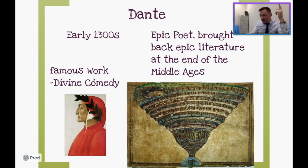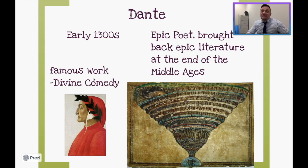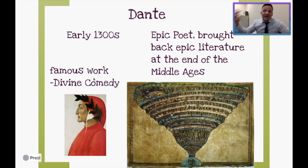His book is over 14,000 lines and is in three different parts with several cantos. His poem is in three separate parts — he journeys through the afterlife, walking through hell, purgatory, and heaven, known in his book as the Inferno, Purgatorio, and Paradiso — the Italian words for hell, purgatory, and heaven.